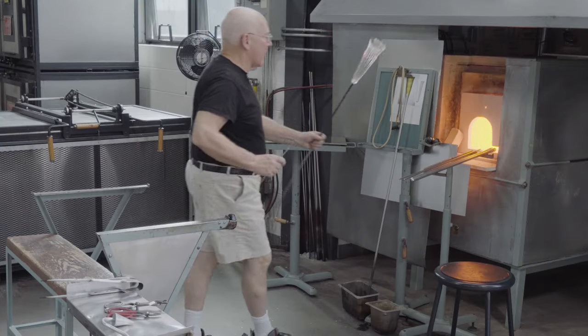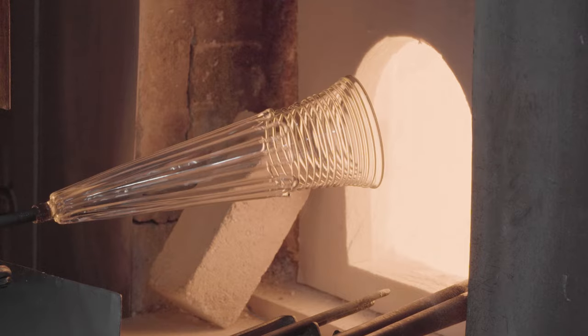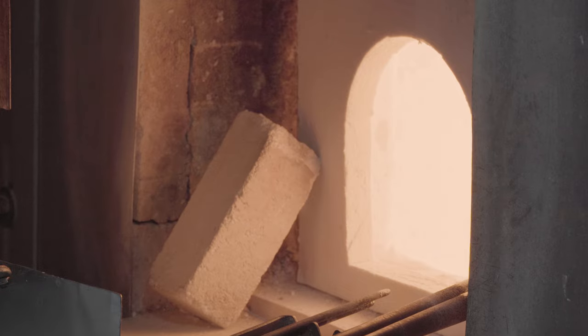The vessel is flashed before placing it in the annealing oven for gradual cooling. An object like this can be cooled in as little as two or three hours.